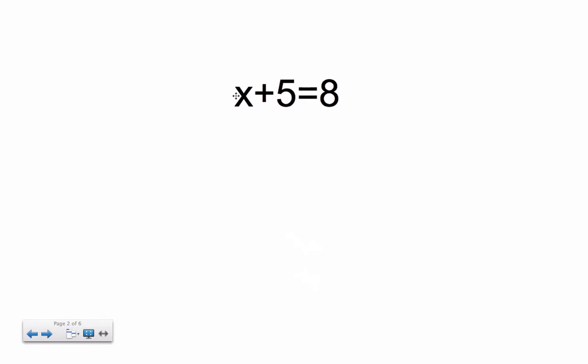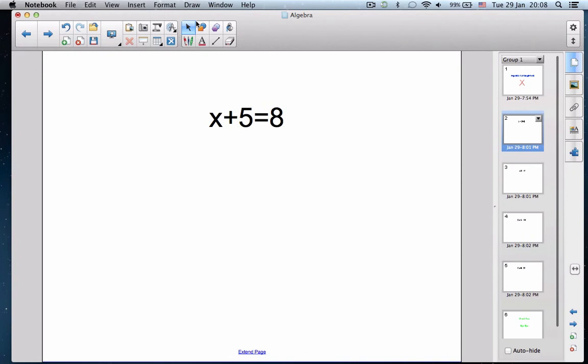We're going to start with a simple equation, x plus 5 equals 8. Now you might do this immediately out of your head, but we're going to work through it. When we're working through it, we're going to take a pen. x plus 5 equals 8. You might immediately find out, something plus 5 equals 8, so 3 plus 5 equals 8, so x would be 3, but we want to do it the proper way.